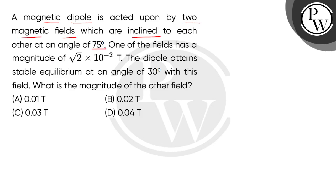One of the fields has a magnitude of square root 2 multiplied by 10 to the power minus 2 Tesla. The dipole attains stable equilibrium at an angle of 30 degrees with this field. What is the magnitude of the other field?